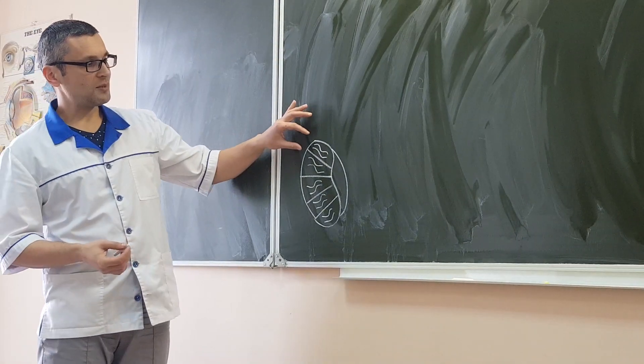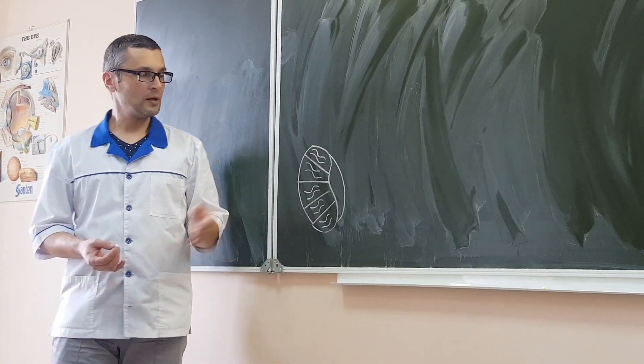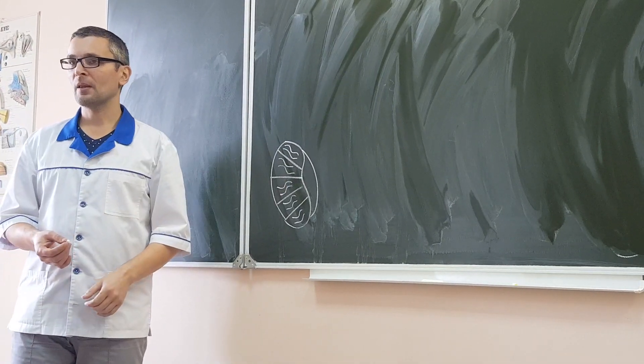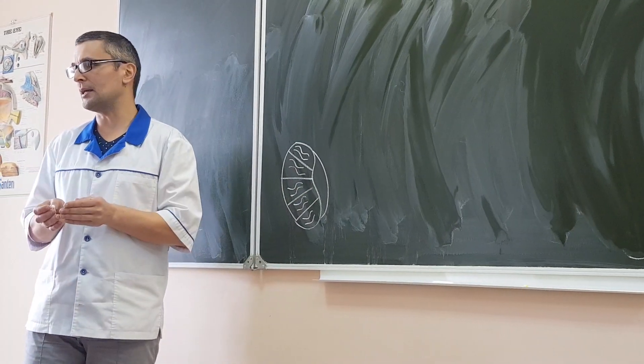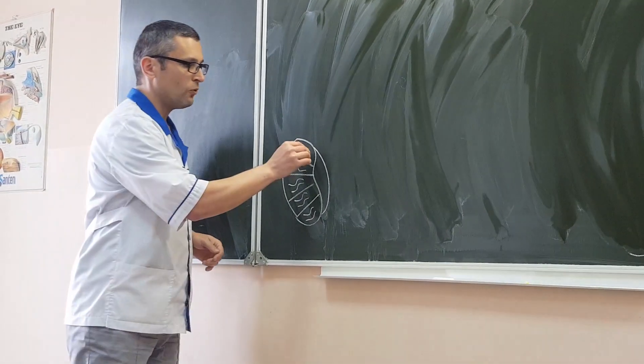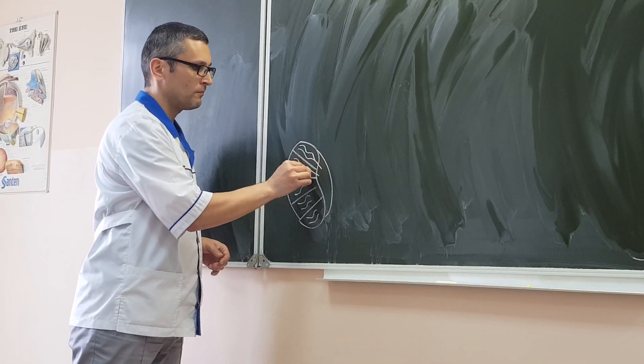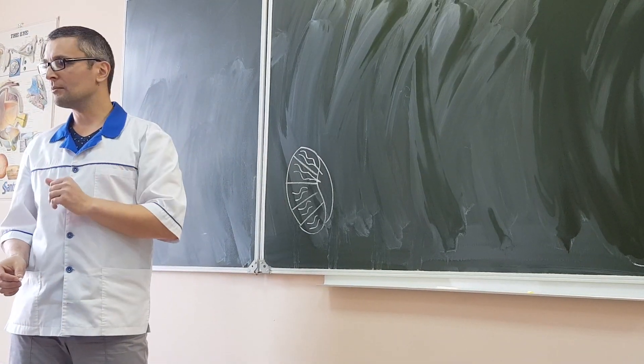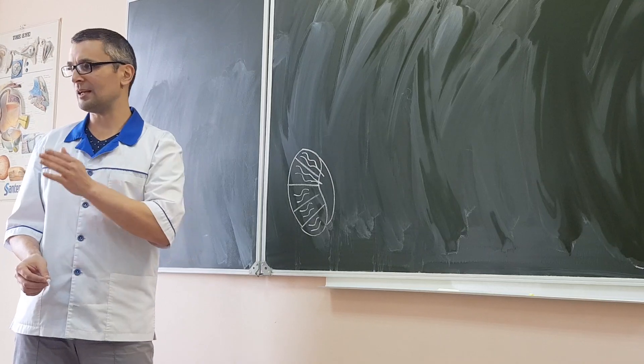All tubules seminiferous convolutes, convoluted seminiferous tubes, they go from the anterior edge posteriorly, and just in the posterior end of every lobulus, they unite together to form tubules seminiferous recti. Look, if this tubule were convoluted, curved, so this tubules seminiferous rectus, straight tubules.